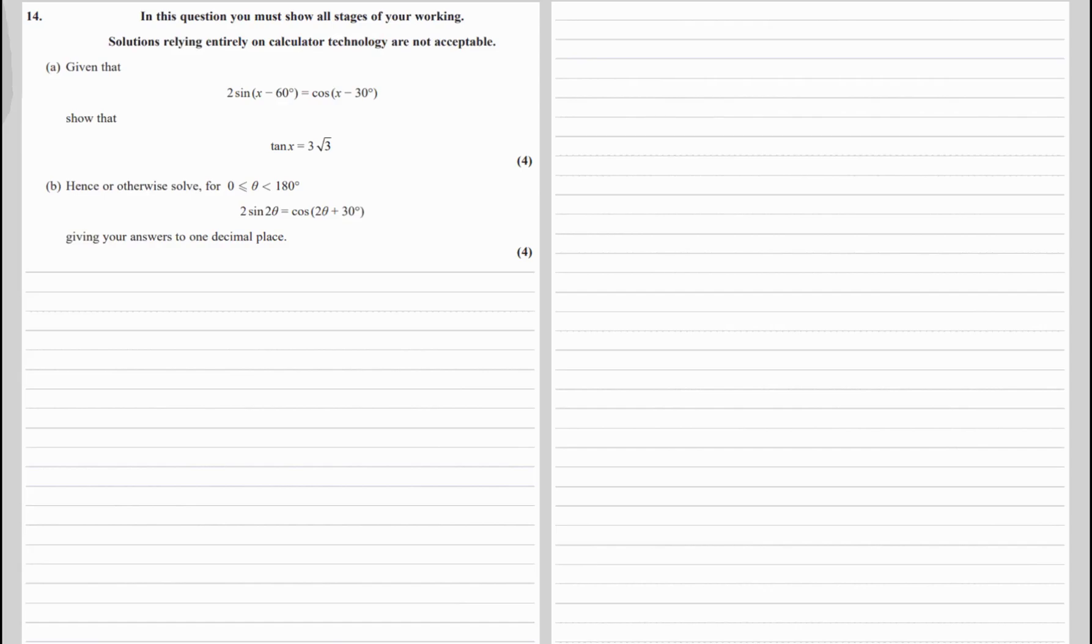Given that 2 sine x minus 60 degrees equals cos x minus 30 degrees, show that tan x equals 3 root 3.